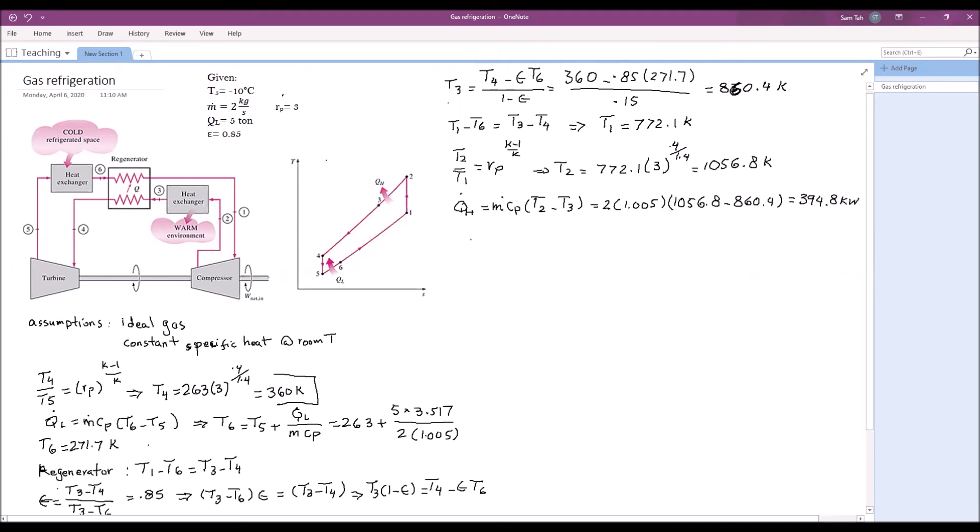And finally, we want to find out what the COP is. The COP basically is Q dot L over W dot net in, or Q dot L divided by Q dot H minus Q dot L. 17.6 kilowatts over 394.8 minus 17.6. And we get a COP of 0.047.